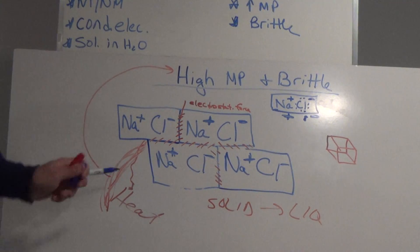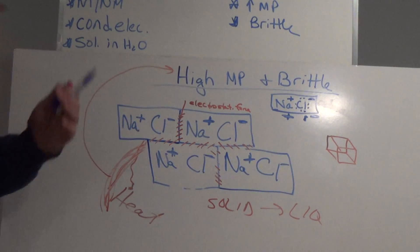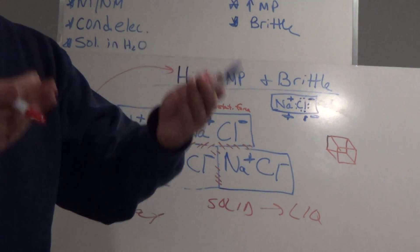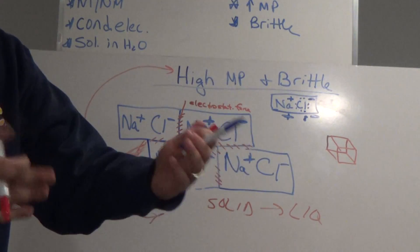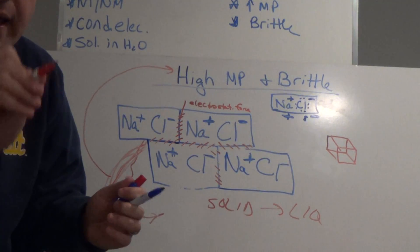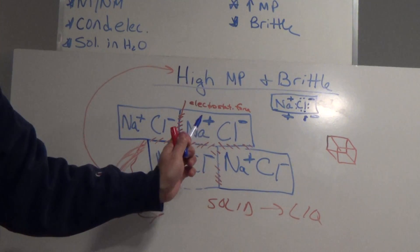Now let me ask you this, could electricity go through here? No, because electricity needs free dissociated ions in solution. Those dissociated ions are going to carry that electrical current. These guys ain't going to carry anything, they're stuck to each other.